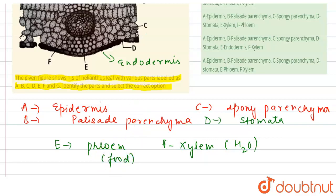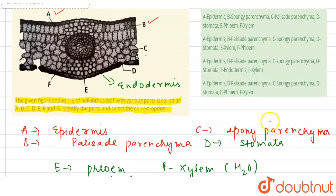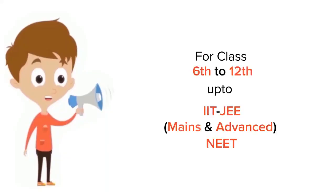If we see the options here, then we have A as epidermis, B is the palisade, C is spongy, D is stomata, and E is phloem, F is xylem. So option four is correct.